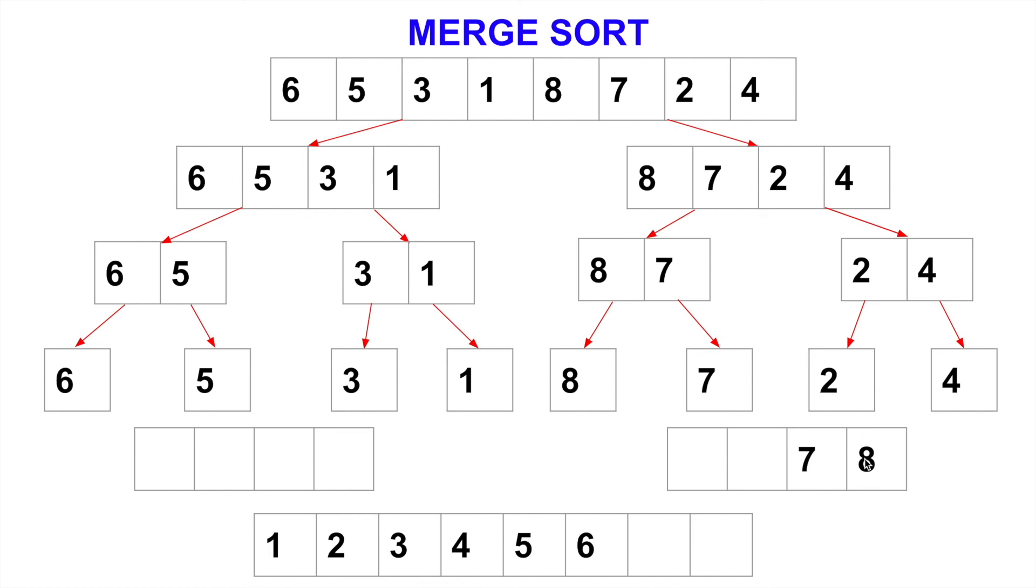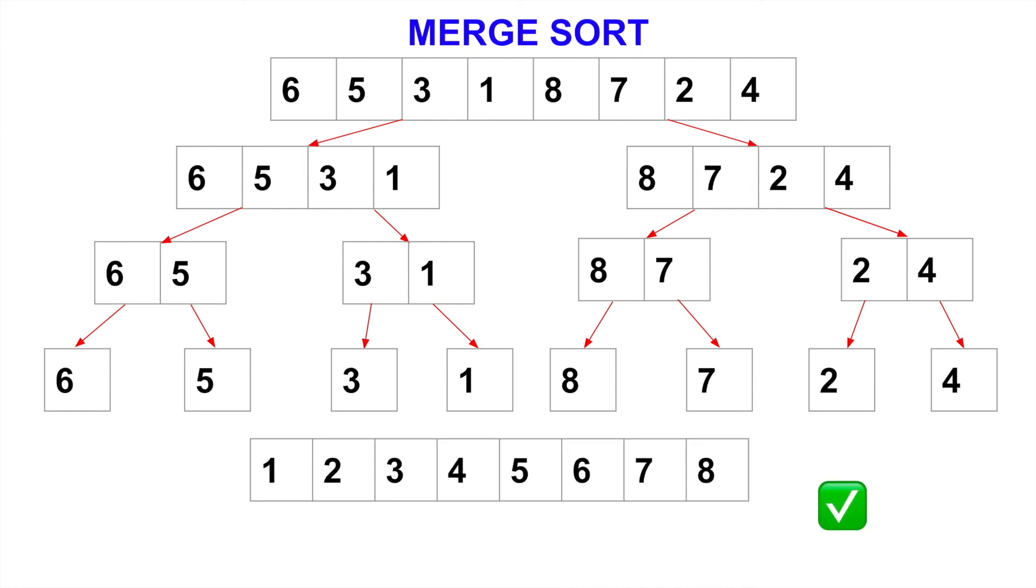Now we'll just copy the remainder. Since this subarray is already empty, we can just copy the remainder of this one into this array because it's sorted already. Now we've got the final output, which is 1, 2, 3, 4, 5, 6, 7, 8. This is the entirely sorted array. This is how merge sort really works.